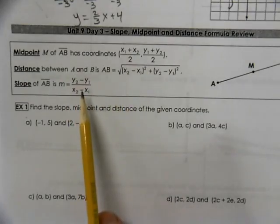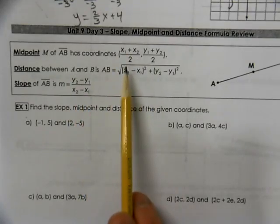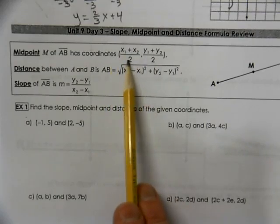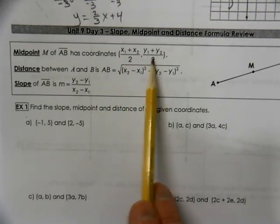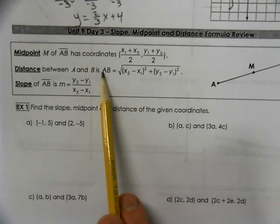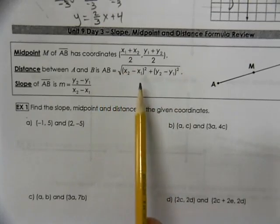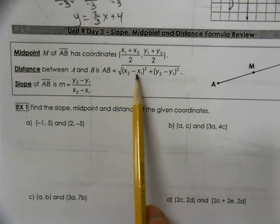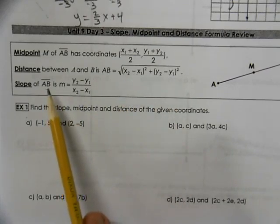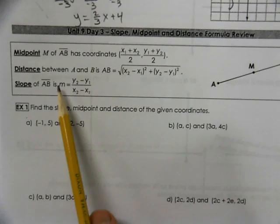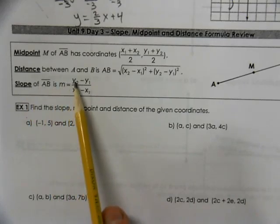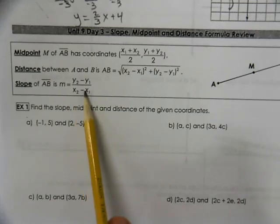Now we've worked with each of these formulas throughout the year already, so we should be pretty familiar that the midpoint is the average of the x's, comma, the average of the y's. The distance formula is the square root of our two different terms, the difference of our two different terms squared. And the slope is the change in y over the change in x.